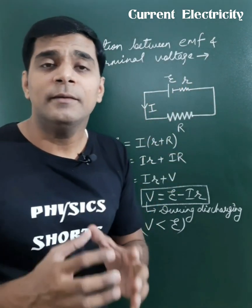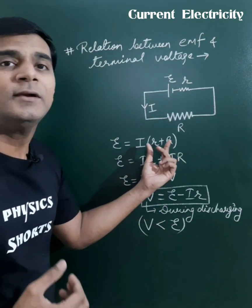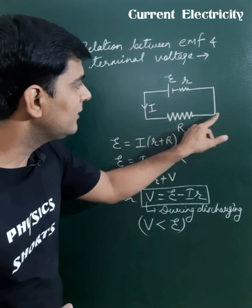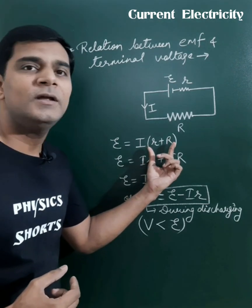The total EMF according to Ohm's law we can write as total EMF is current times total resistance. These two resistances, small r and capital R, are connected in series for this circuit. So total resistance will be r plus R.